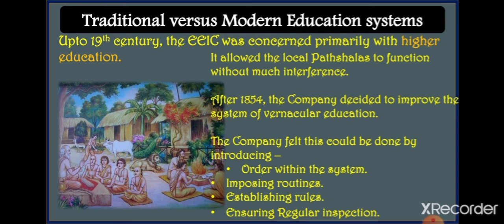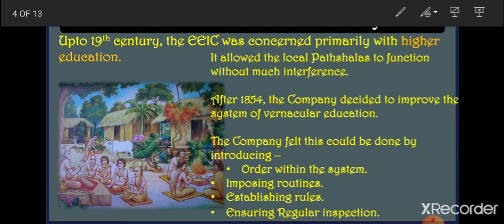When Britishers came to India, they basically focused on higher education. When Wood's Dispatch came, three universities were set up in India. So they focused on higher education only in the beginning, but they allowed local patshalas to function without much interference. That means Britishers worked in the field of higher education, while local patshalas continued running as they were.